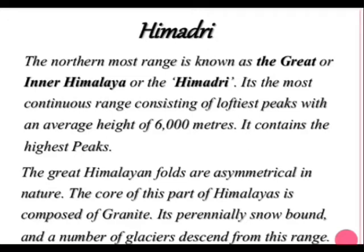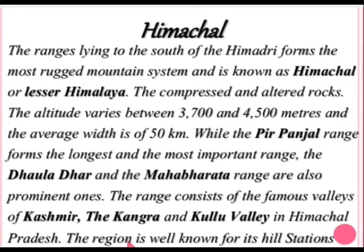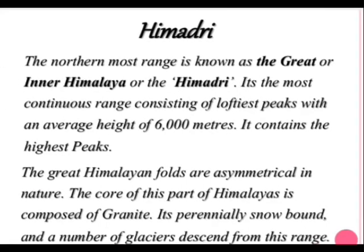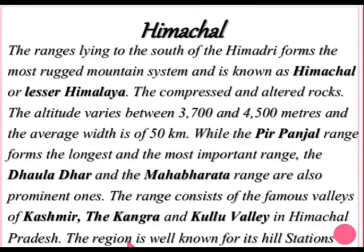The Himalayas have very large peaks with snowfall, making them perennially snow-bound. The ranges lying to the south of the Himadri form the most rugged mountain system, known as the Himachal or the Lesser Himalayas, with altitude varying between 3700 and 4500 meters — less than the Greater Himalayas' 6000 meters. The Pirpanjal range forms the longest and most important range here. The Dholadhar and the Mahabharata ranges are also prominent. This region includes the famous valleys of Kashmir, Kangra, and Kulu in Himachal Pradesh, and is well known for its hill stations.